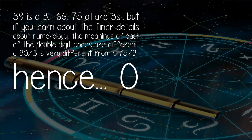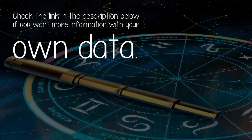A 33 is very different from a 75. Hence, 0 is not equal to 9. Check the link in the description below if you want more information with your own data.